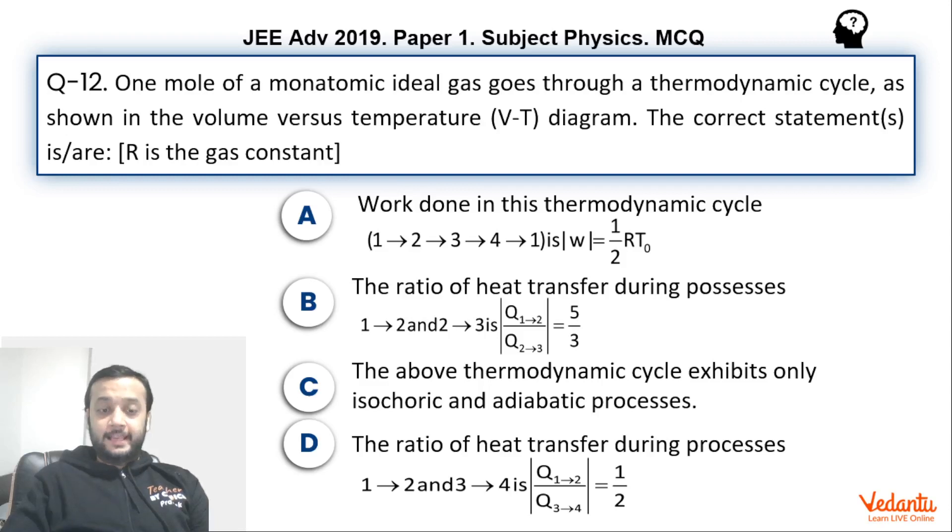Hi dear students. Let's see this question that came in JEE Advanced Paper 1, Physics, in the year 2019. This question was from the topic of thermodynamics based on a multiple choice correct scheme, and I can tell you that this was the easiest question in the whole paper.